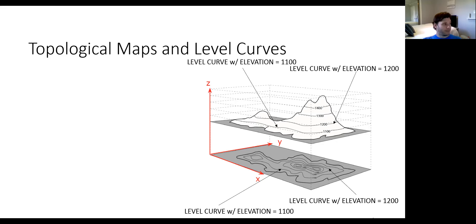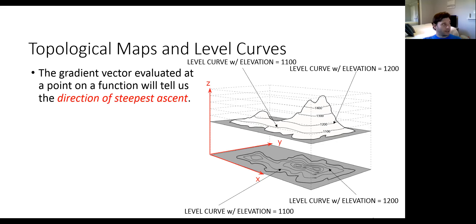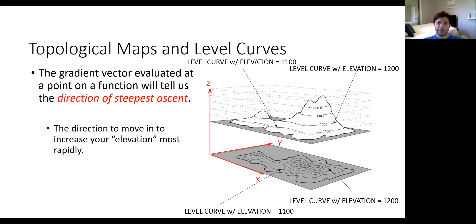If we pick a point on this map and evaluate the gradient, it tells us in which direction we would move up the mountain the fastest relative to that point — the direction that increases our elevation most rapidly. In machine learning, our goal is not to maximize the cost function but to minimize it. You can use the gradient descent algorithm to solve both min and max problems; in the max problem framework, you're doing gradient ascent.